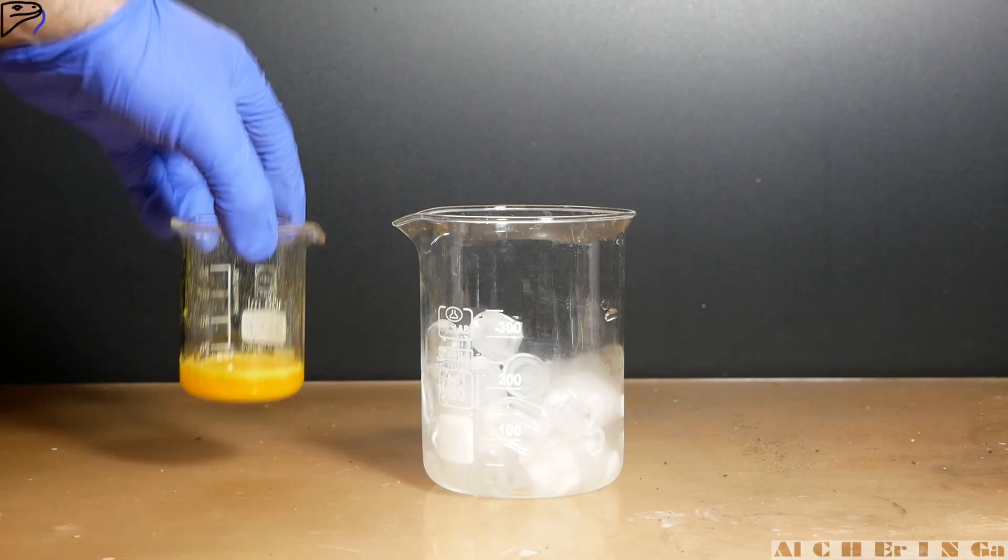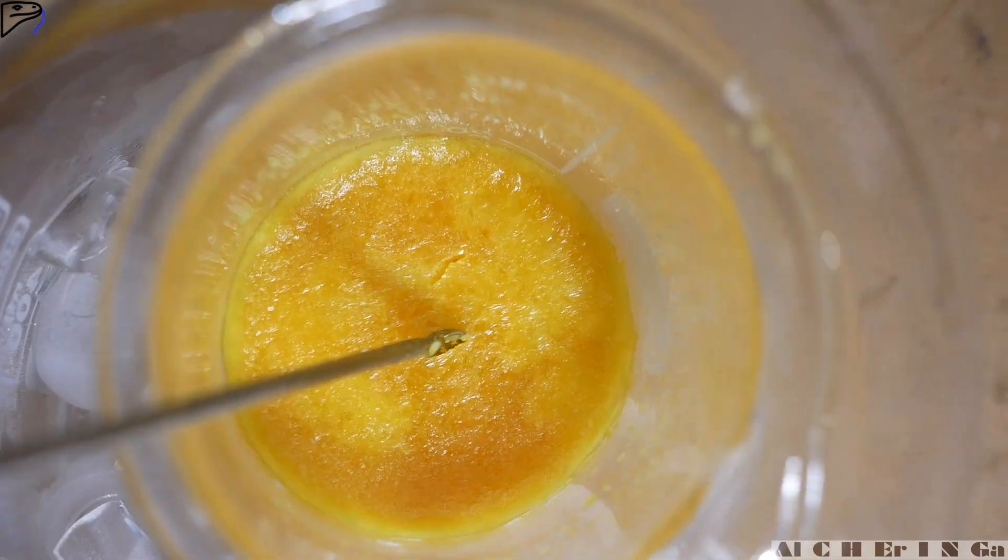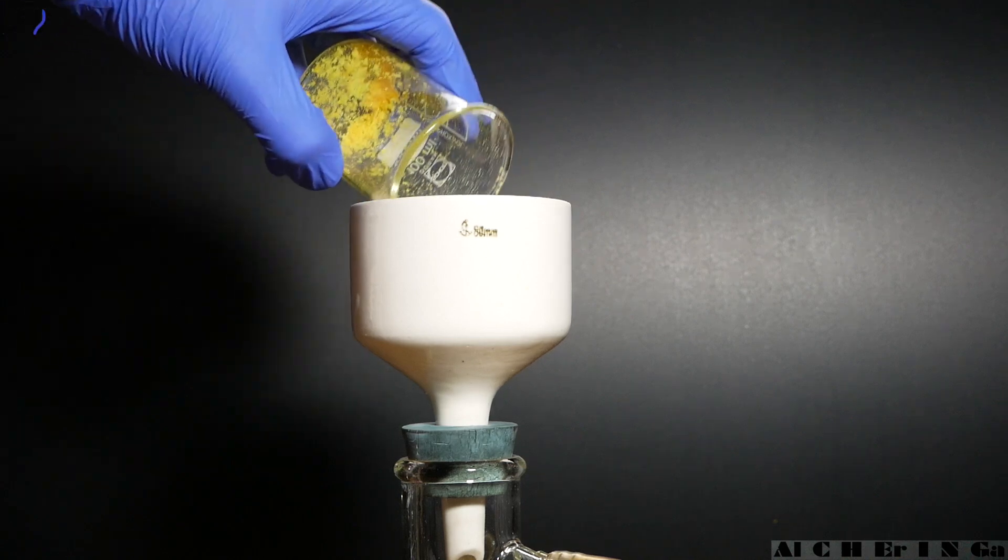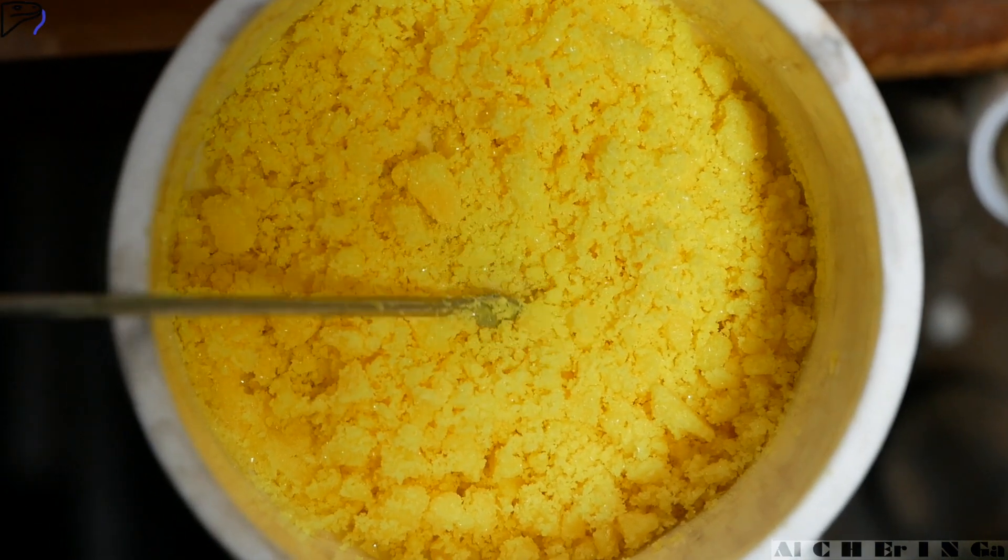To get most of the crystals to crash out, the flask was put into an ice bath. After an hour, more crystals were formed and it was filtered under vacuum. Again, the vacuum was left on for an additional 20 minutes to thoroughly dry the crystals.